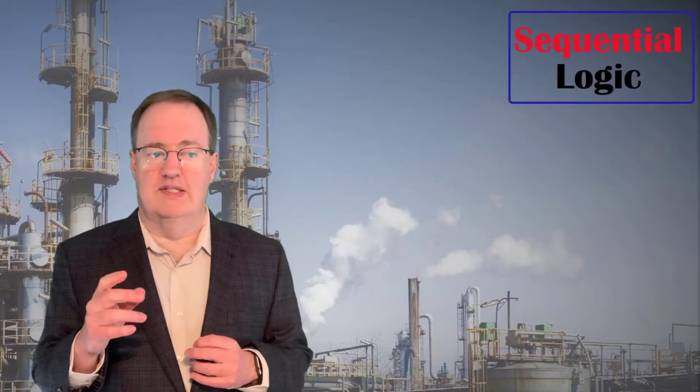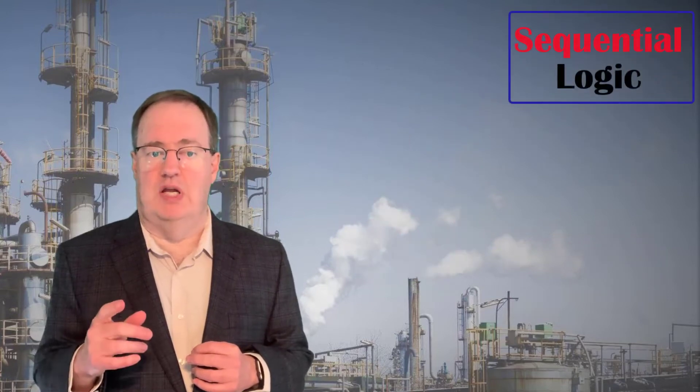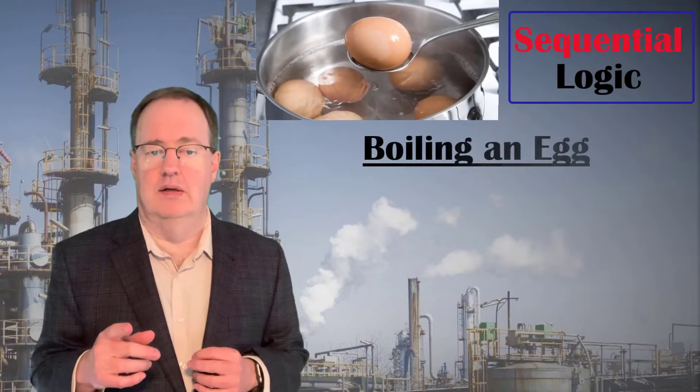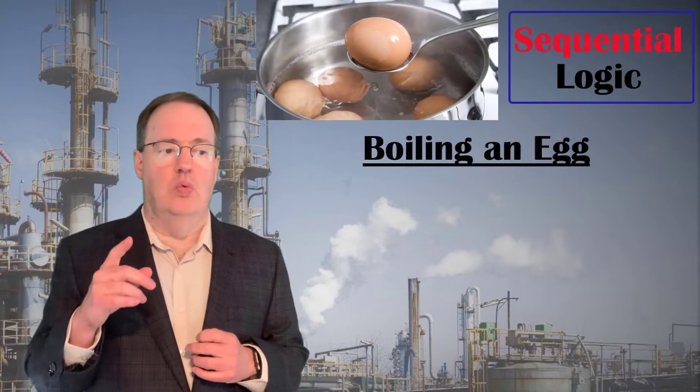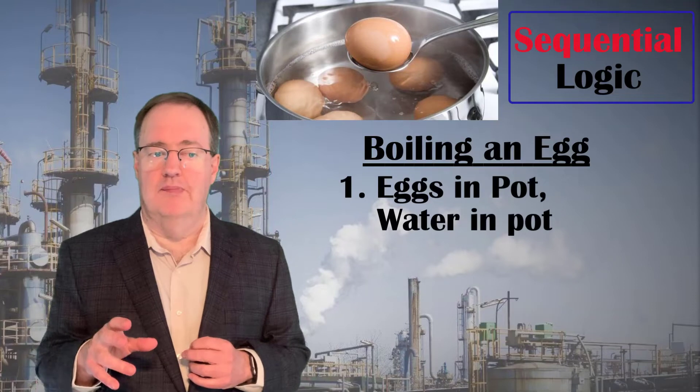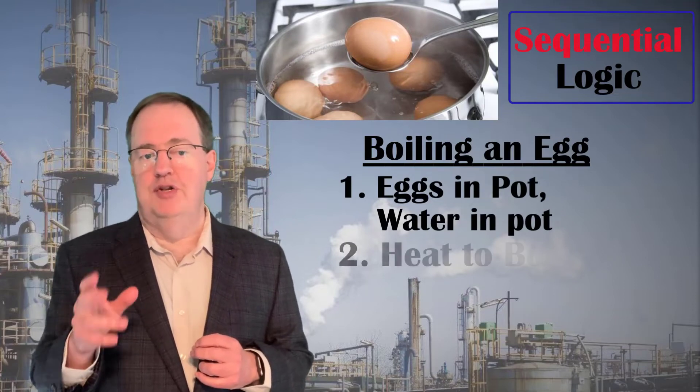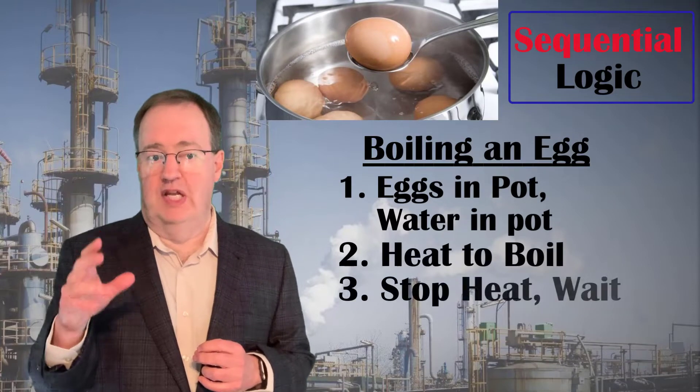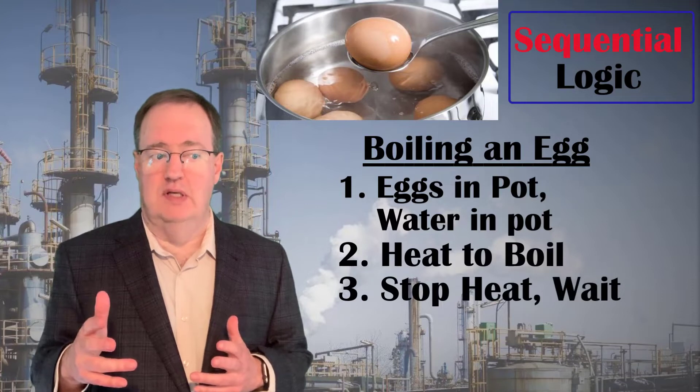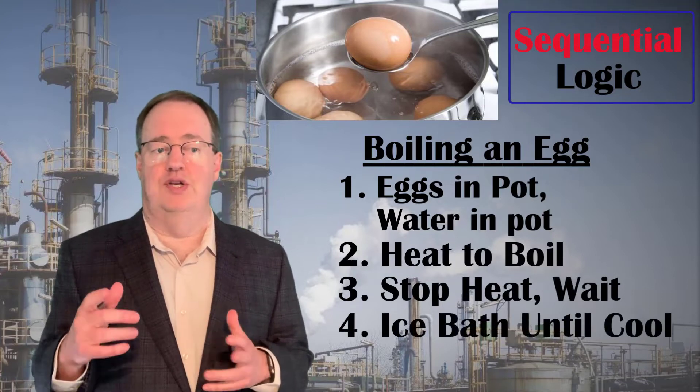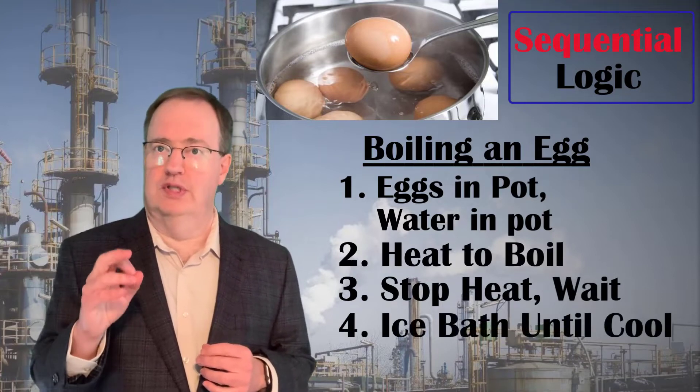Let's start looking at sequences by looking at a recipe. How to boil an egg. To boil an egg, we must put the eggs in a cooking pot, cover with water, heat to boiling, turn off the heat and let sit for 12 minutes, then transfer the eggs to ice water until they are cool to the touch.